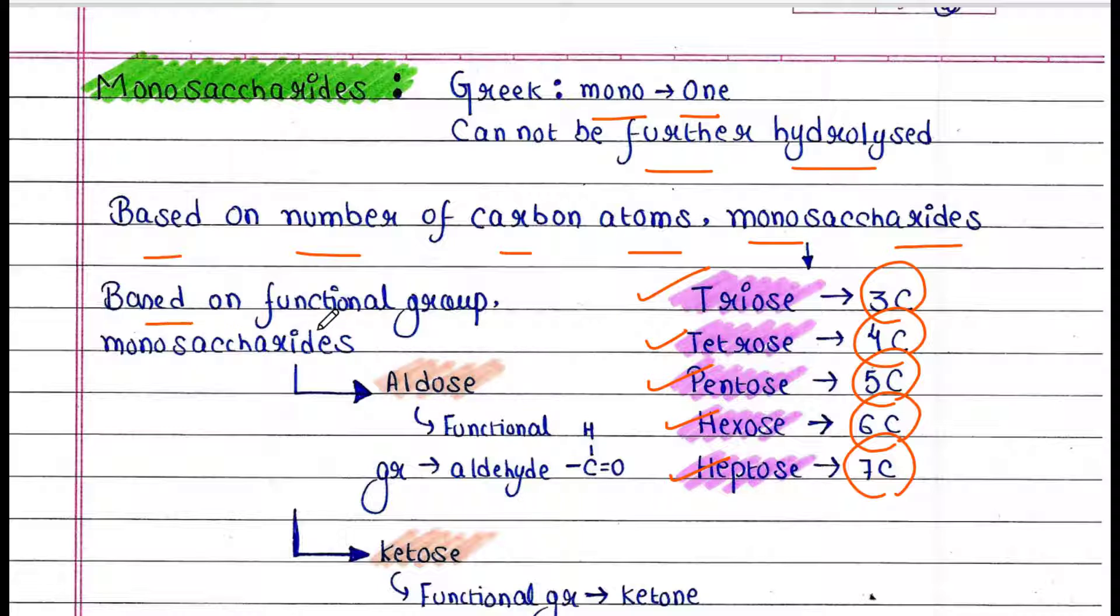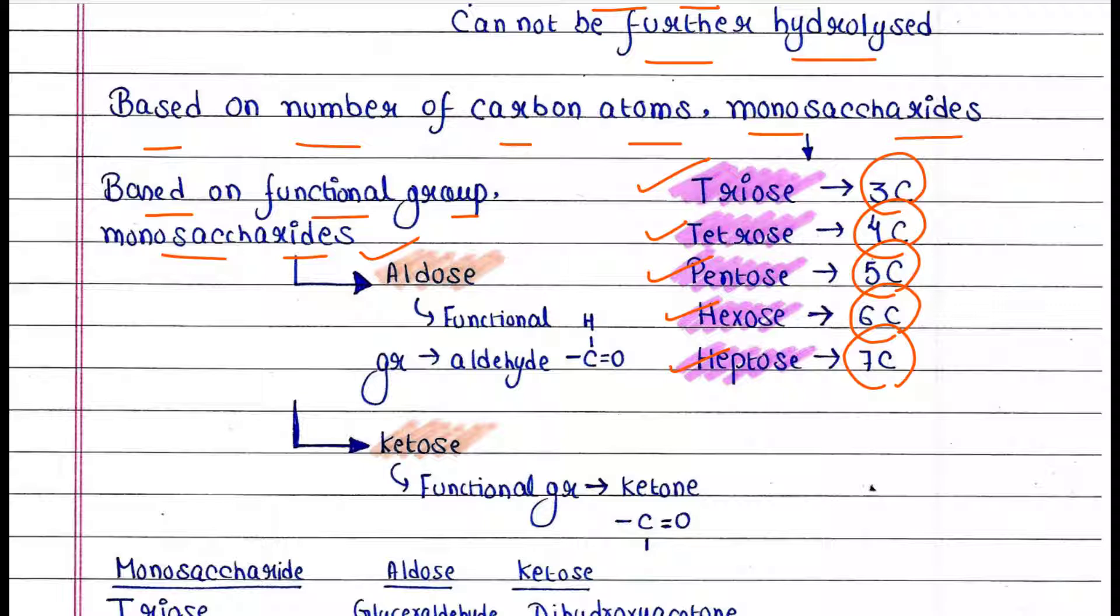Now based on functional group, monosaccharides are of two types. First is aldose. From the name itself you can understand—in aldose the functional group is aldehyde, CHO, and hence the name aldose. Another type is ketose. Here the functional group is ketone, CO.